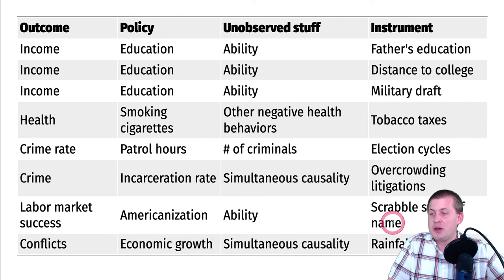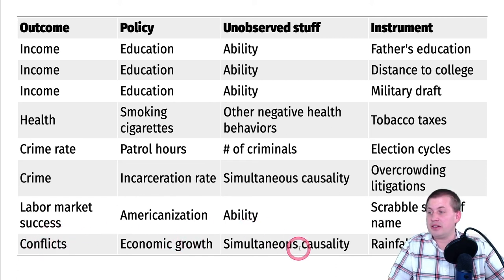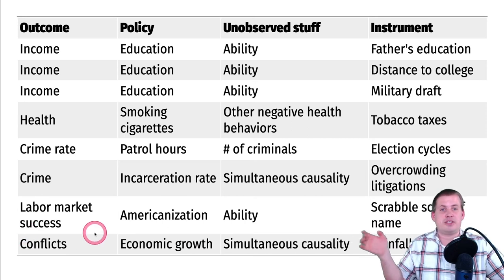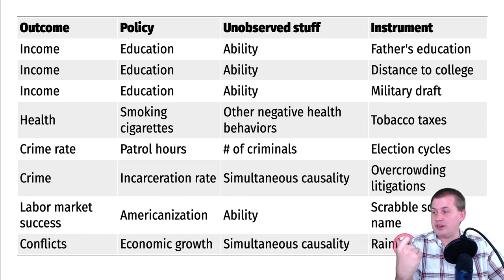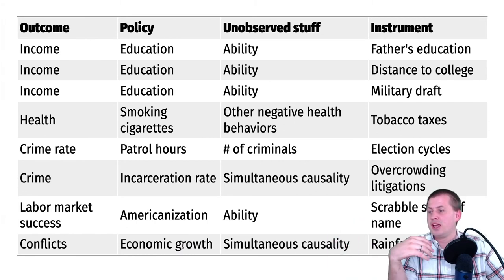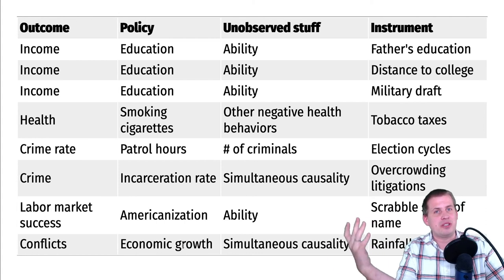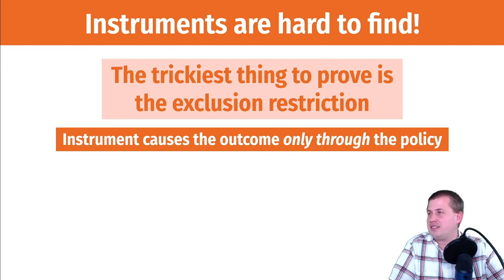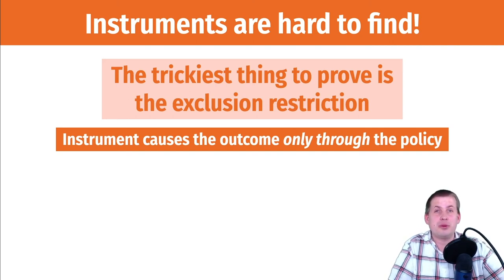The rationale is that rainfall causes economic growth which then causes civil war, letting you get rid of unmeasured things and simultaneous causality. But if you think about the exclusion principle, you have to say that rainfall only causes civil war through economic growth — and as we'll see in a minute, that's actually not the case. It sounds cool and weird but it's not weird enough. There are other pathways between rainfall and civil war that don't go through economic growth. Instruments in the real world are very, very hard to find, mostly because of the exclusion restriction.